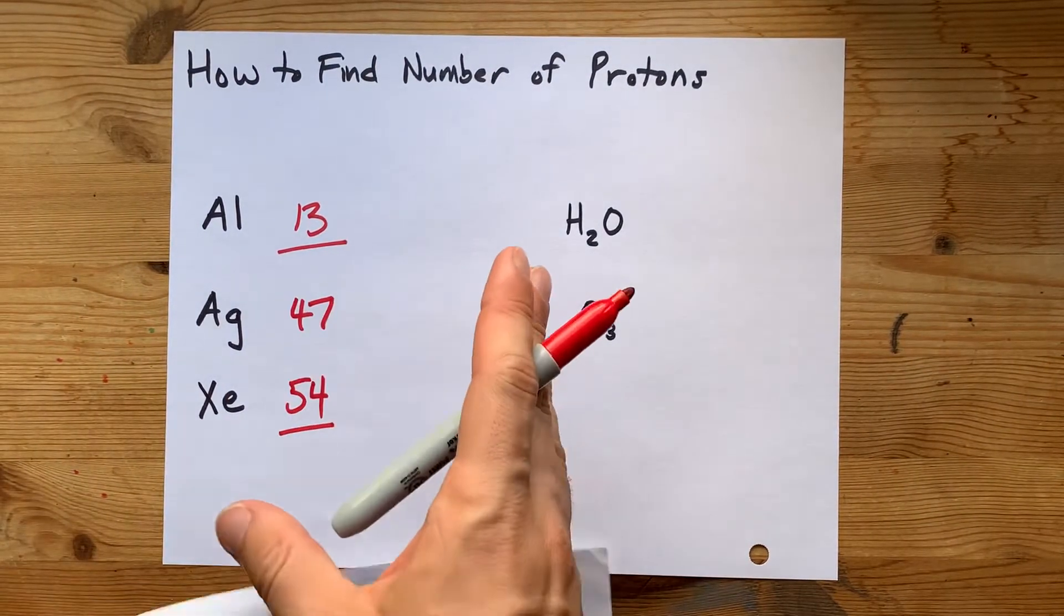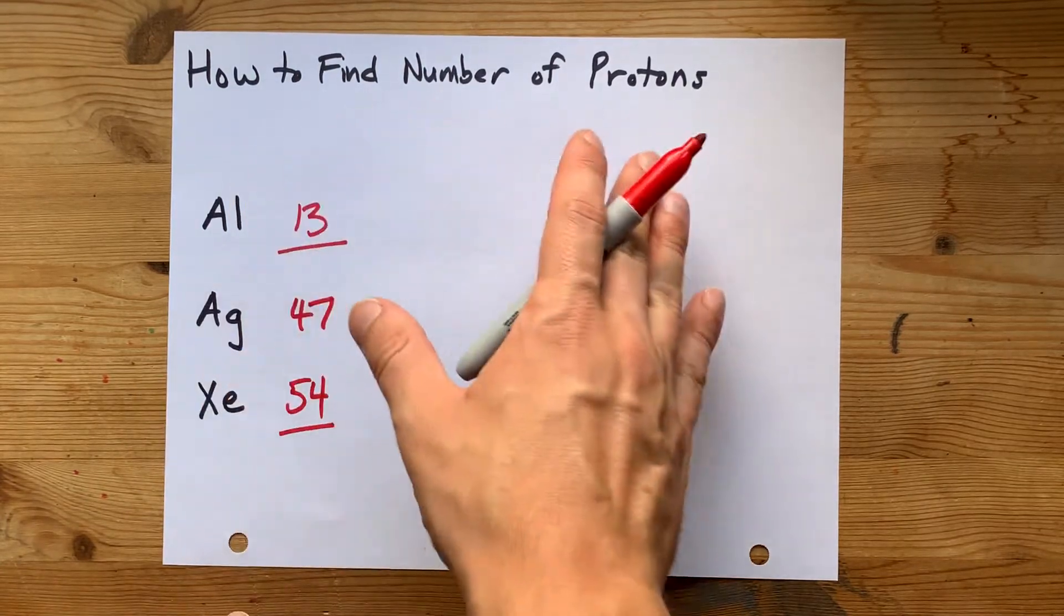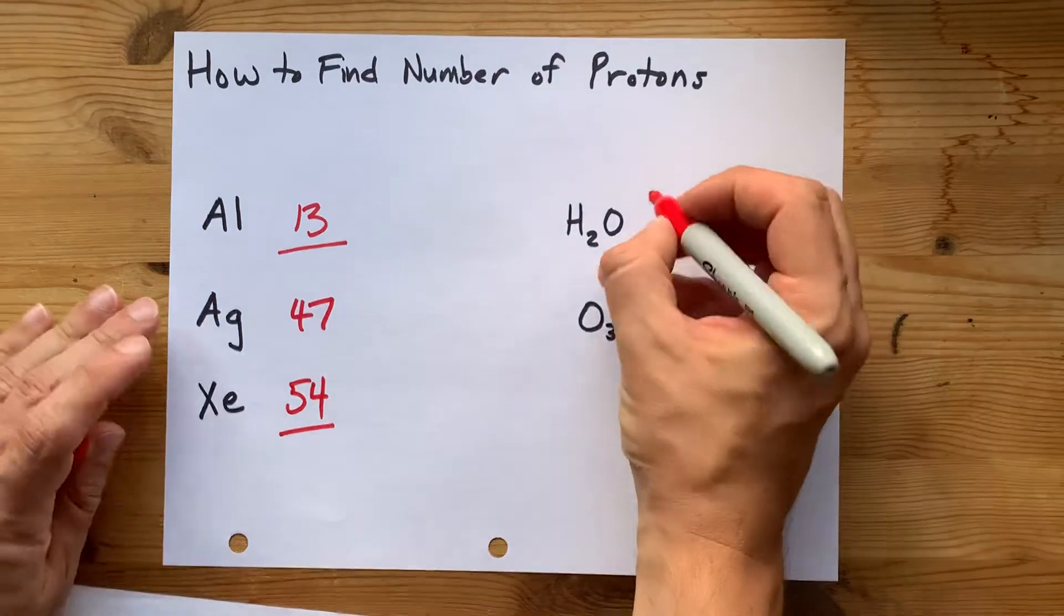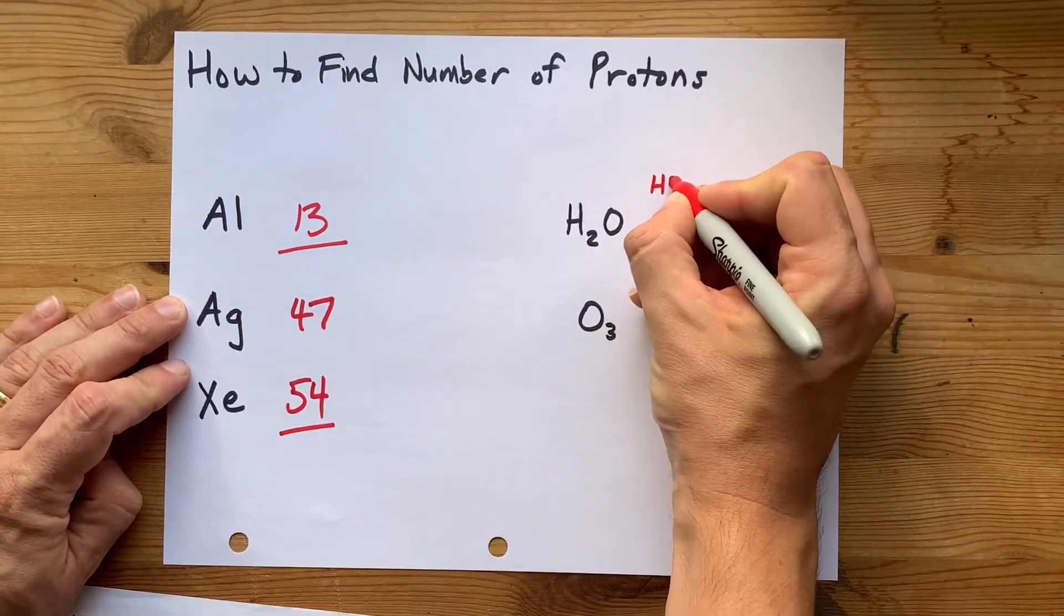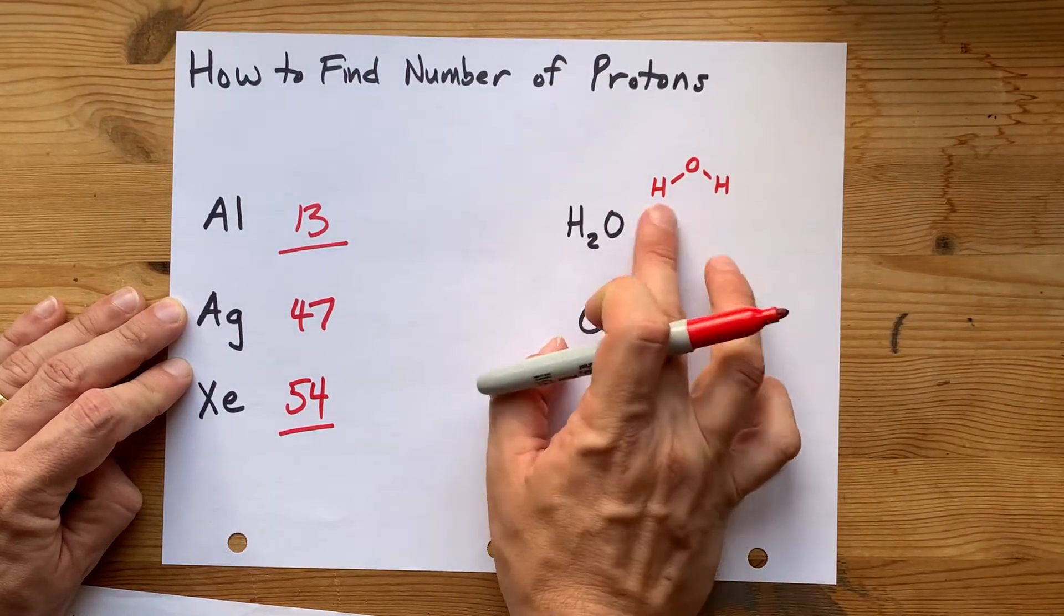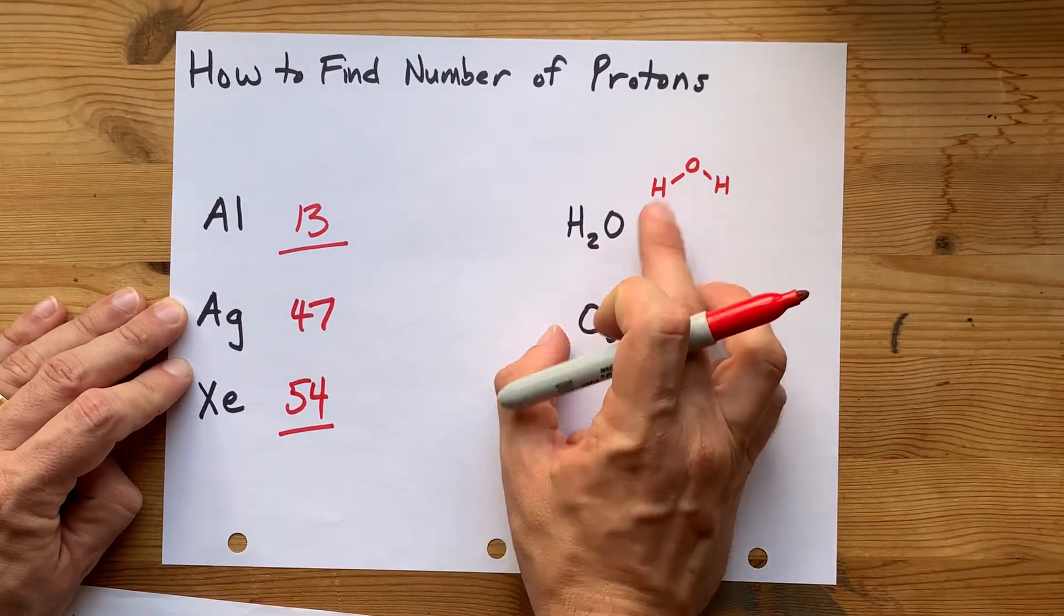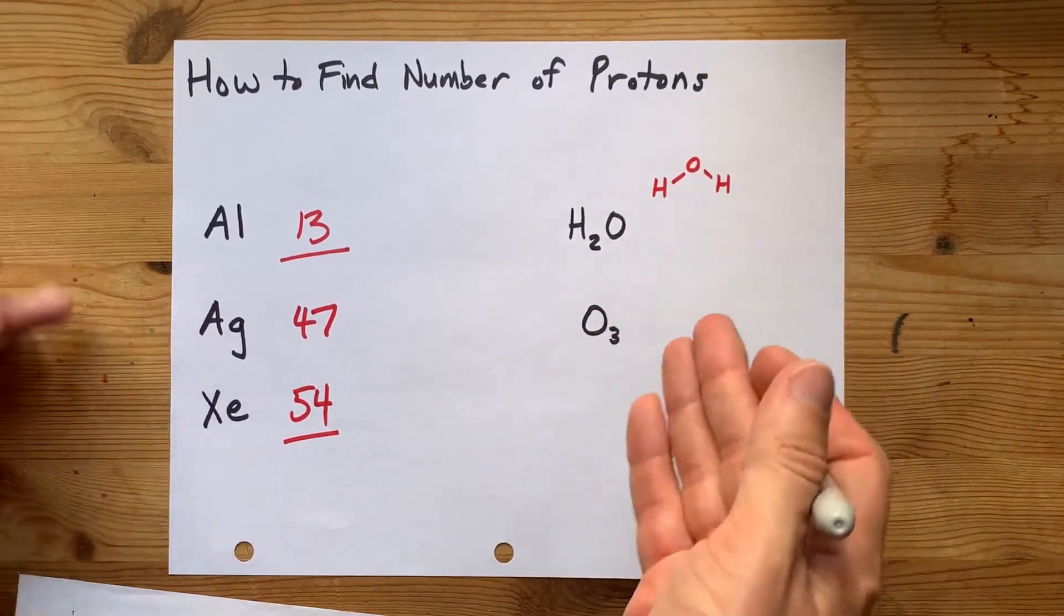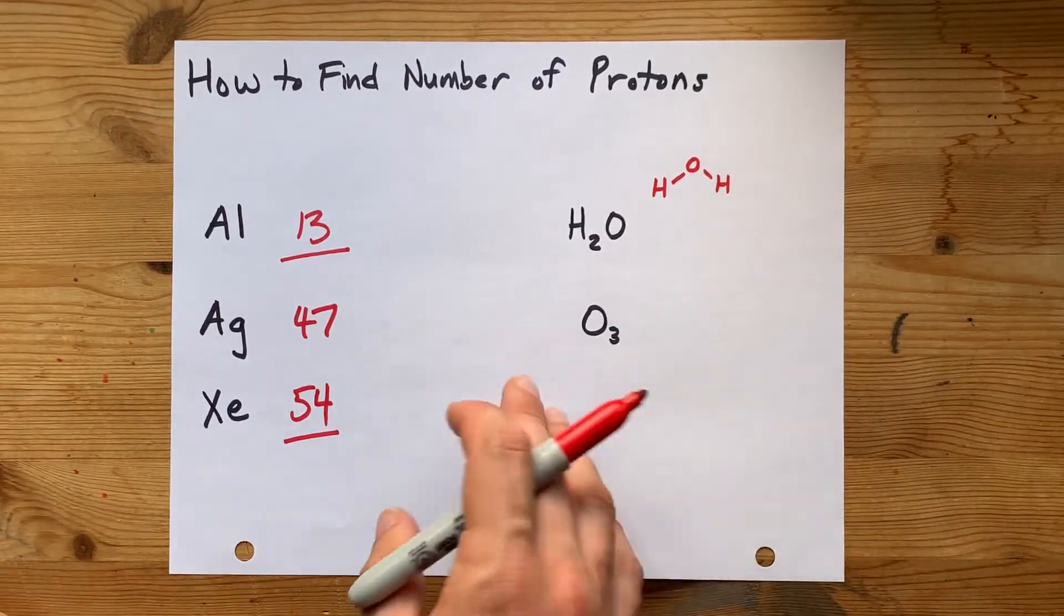Now some teachers will try to trick you and ask you how many protons are in H2O. That's a molecule. And if you were to draw that molecule out, you'd have an H connected to an O and another H. See, there's two H's and one O. I know there's no one written there, but it's kind of like exponents - when it's not there, it's a one.